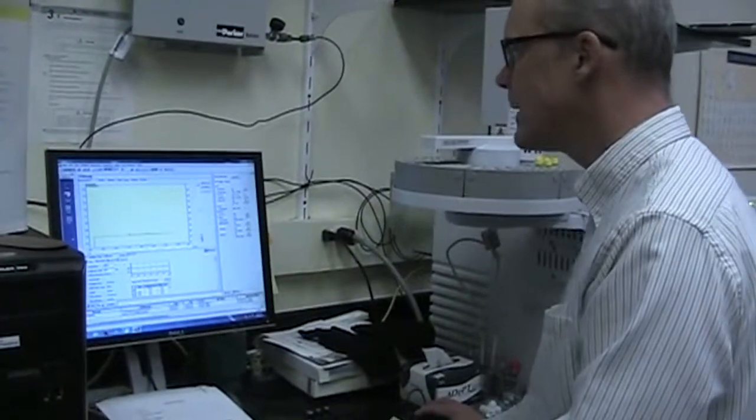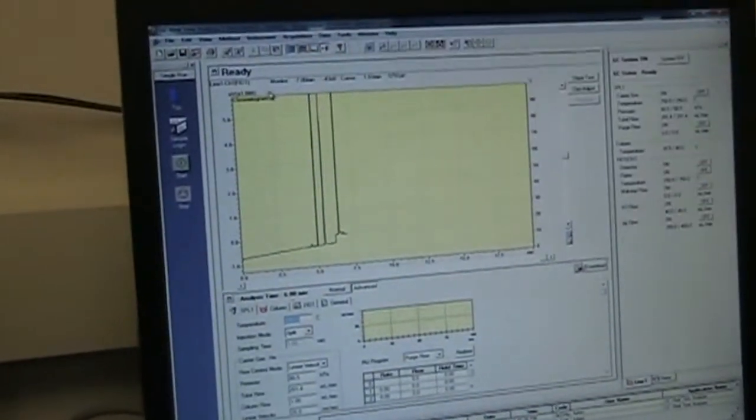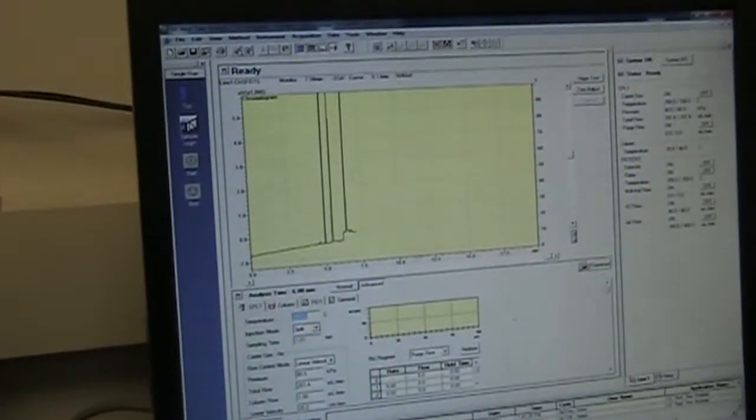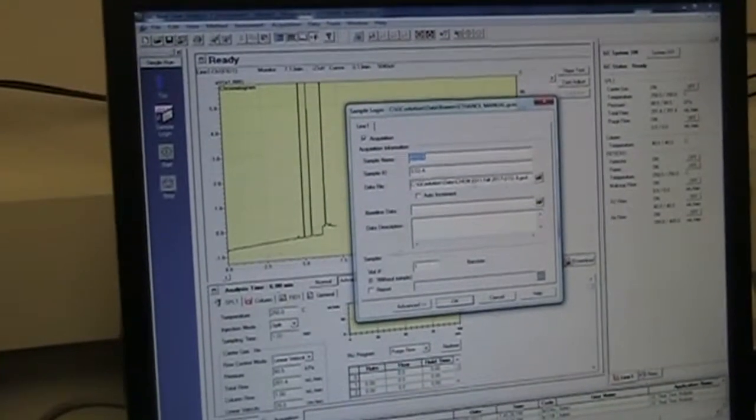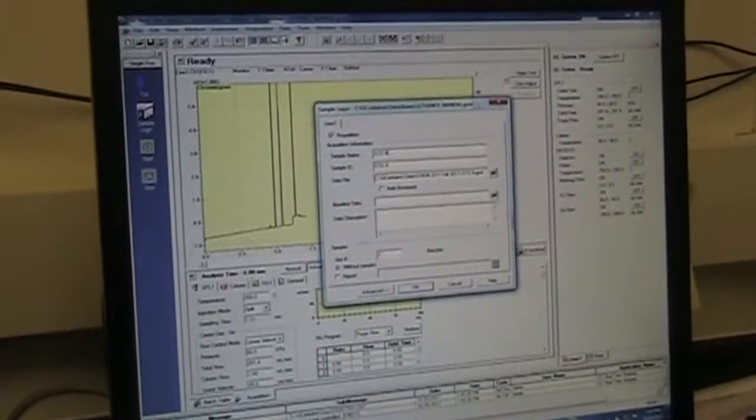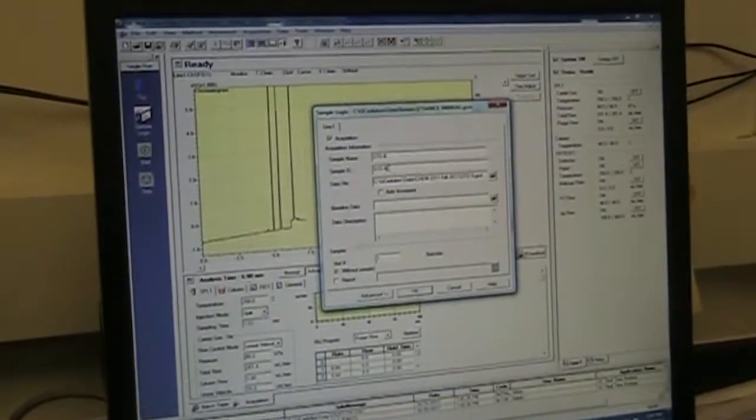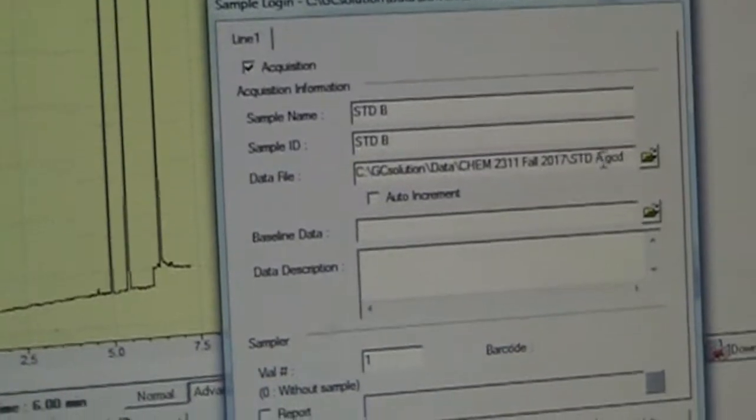So single run and then sample login opens up this screen, and this is where you provide things like the sample name. I'm going to just call this Standard A. Sample ID, I'm going to say the same thing, Standard A, and then the data file, which is really the folder you want the data file in and the data file name.